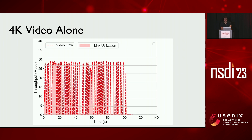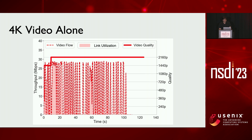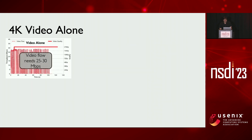To set up a baseline, let's see a scenario where we just play the 4K video and nothing else. The dashed line shows the throughput over time for the video flow, and the shaded region is the link utilization. The y-axis on the left is throughput in Mbps and the x-axis is time in seconds. The solid line shows video quality, and the y-axis on the right is video quality in increasing order. The takeaway is that 30 Mbps is sufficient for the video flow to reach the highest video quality of 2160p.